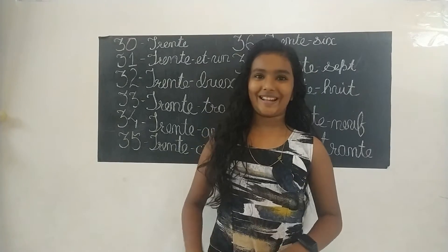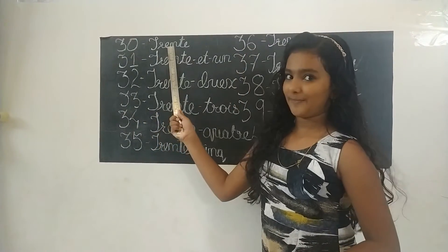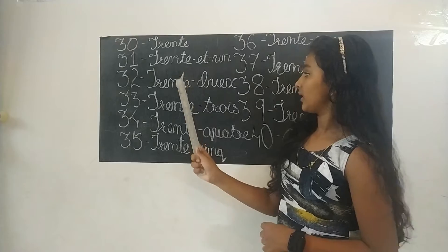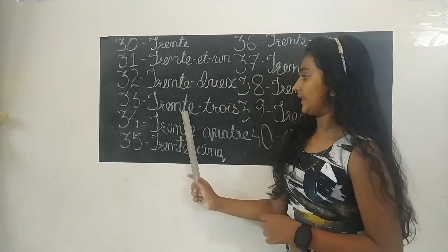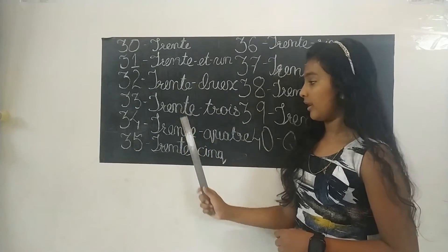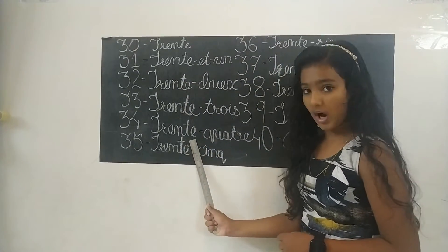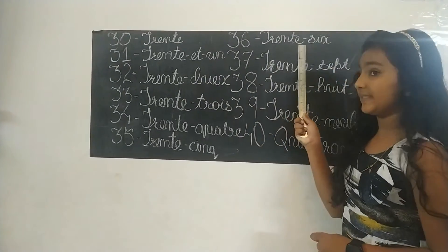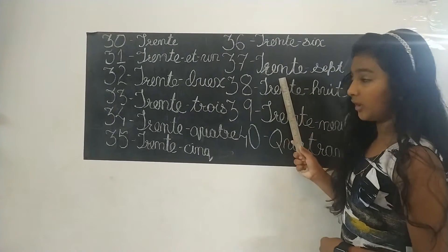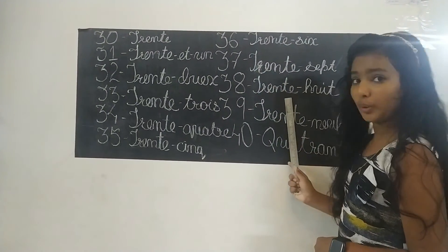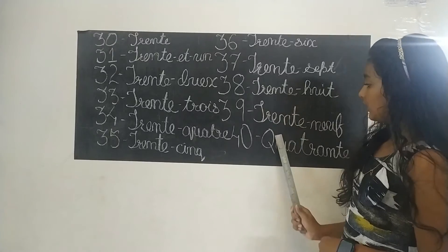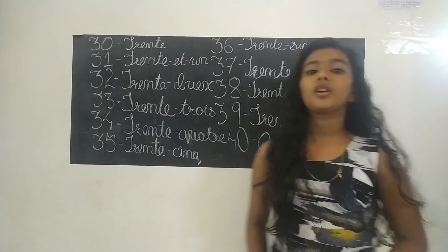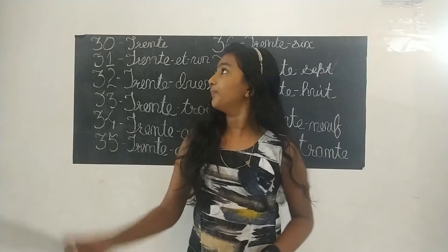And let's get started. Trente. Trente et un. Trente-deux. Trente-trois. Trente-quatre. Trente-cinq. Trente-six. Trente-sept. Trente-huit. Trente-neuf. Quarante. So I'm going to read it for you.